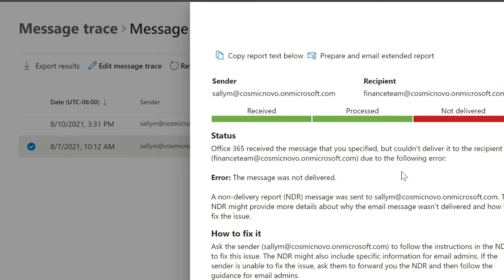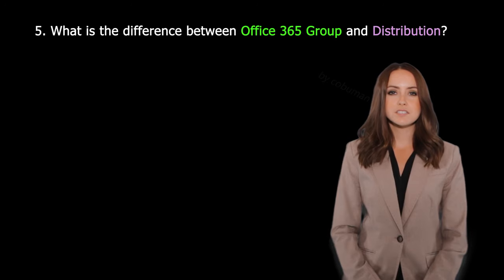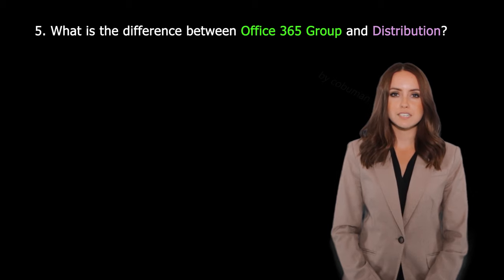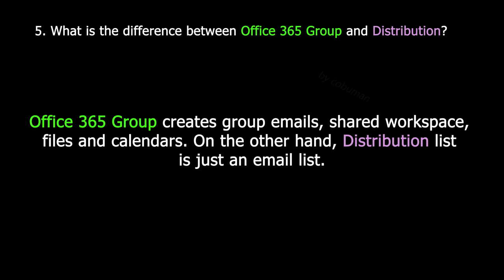What is the difference between an Office 365 Group and a Distribution List? Office 365 Group creates group emails, shared workspace, files, and calendars. On the other hand, a Distribution List is just an email list.